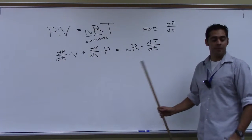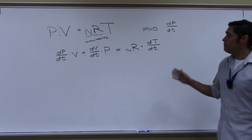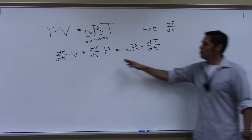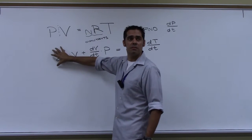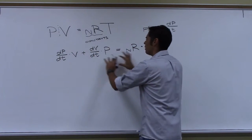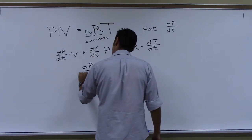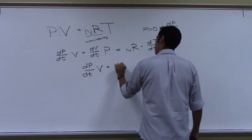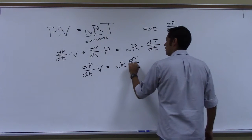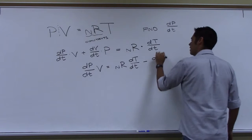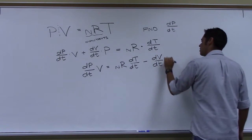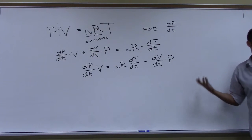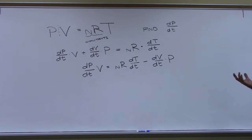We have the potential here for three different derivatives. We wanted dP/dt, so we can isolate it — move the dV/dt term over. dP/dt times V equals nR times dT/dt minus dV/dt times P. All I did was move that term to the other side, and then finally divide by V.